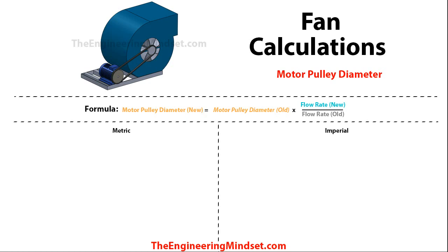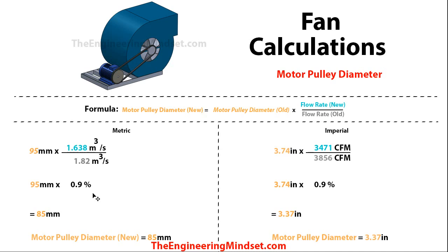If there has been a change in flow rate and you need to know the new motor pulley diameter, use this formula: new motor pulley diameter = old motor pulley diameter × (new airflow rate ÷ old airflow rate). Dropping in the numbers — the airflow rates cancel to give a ratio — and multiplying by the original pulley diameter gives a new motor pulley diameter of 85 mm (3.73 inches).